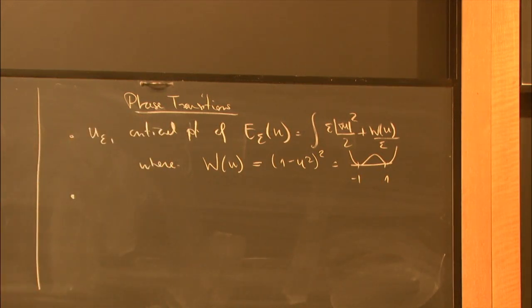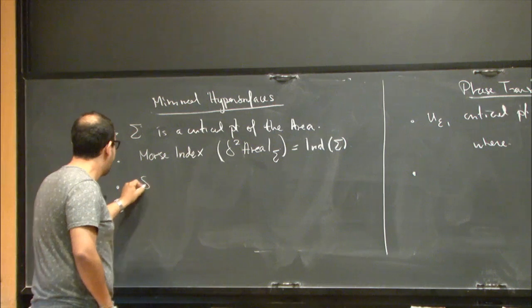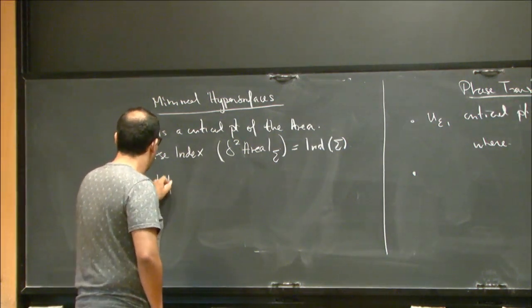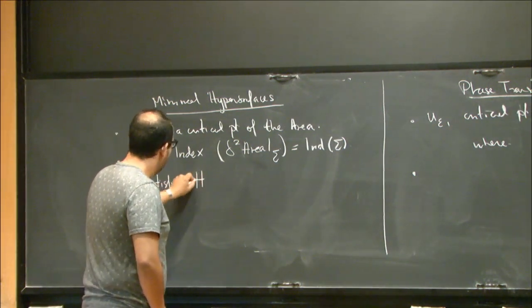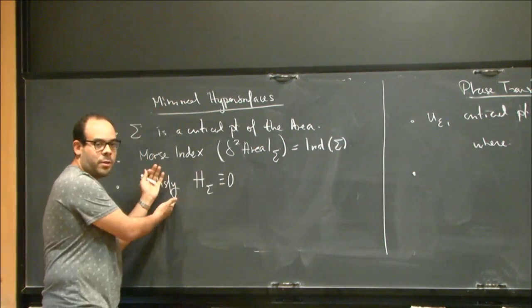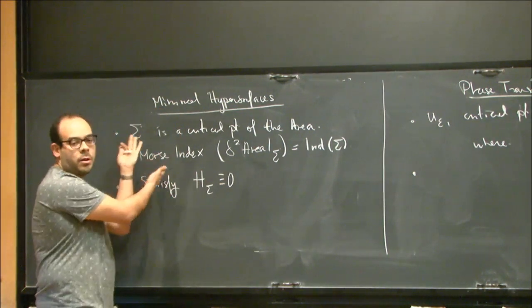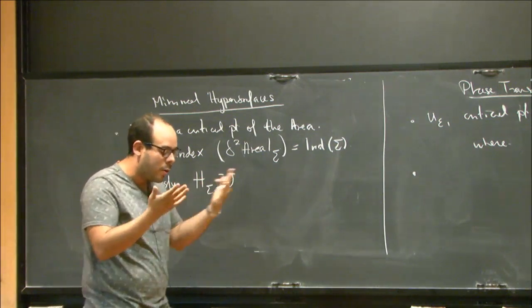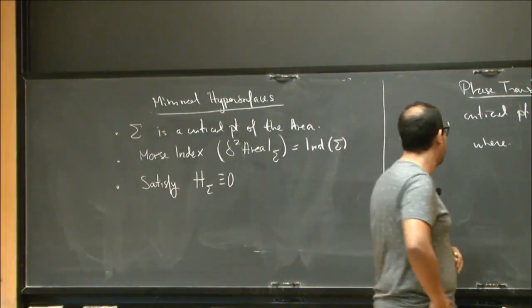Well, something I forgot here to mention about minimal surfaces is that they satisfy the equation mean curvature equal to 0. So this is a first-order condition. And the Morse index is a second-order condition, second-order property that we kind of study about these subjects.